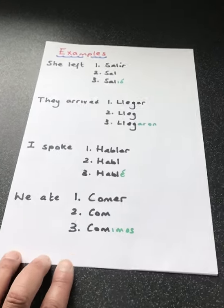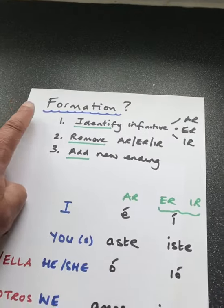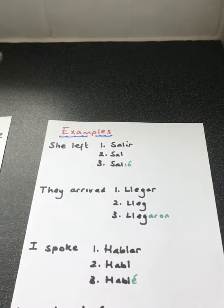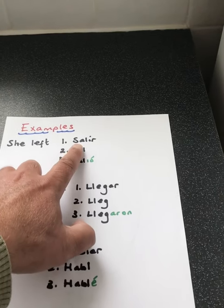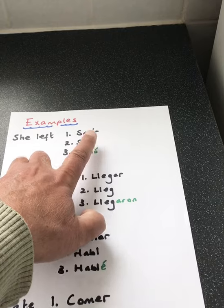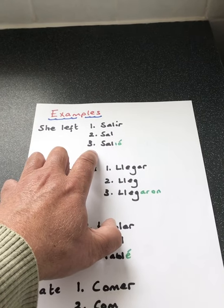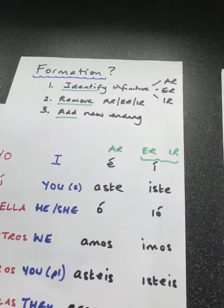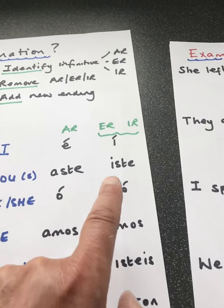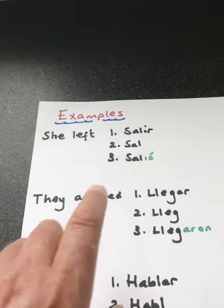Here are some examples. I followed the same pattern — stage one, stage two, stage three. Example number one: she left. I've looked in the dictionary and found that 'to leave' is salir. I've identified the infinitive — stage one. You can see it ends in IR, therefore it is an IR verb. Stage two, I removed the IR, I'm left with 'sal'. Stage three, I've added my new ending. It was an IR verb so I'm in that column — the ending is IO with an accent. Salió.